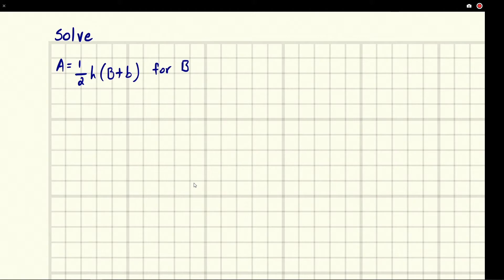The name of the game is get B by itself. Looking at this, the B is inside these parentheses, so that's going to be a problem. We need to get it out of there. I'm going to distribute this one-half H into the parentheses because there's no way to separate the B otherwise.